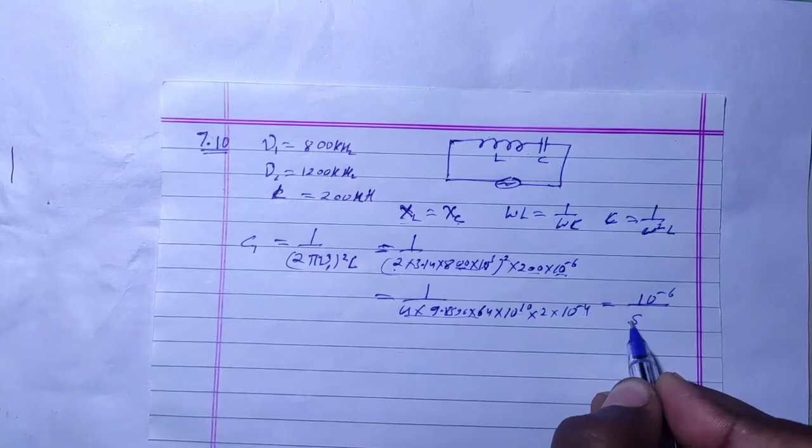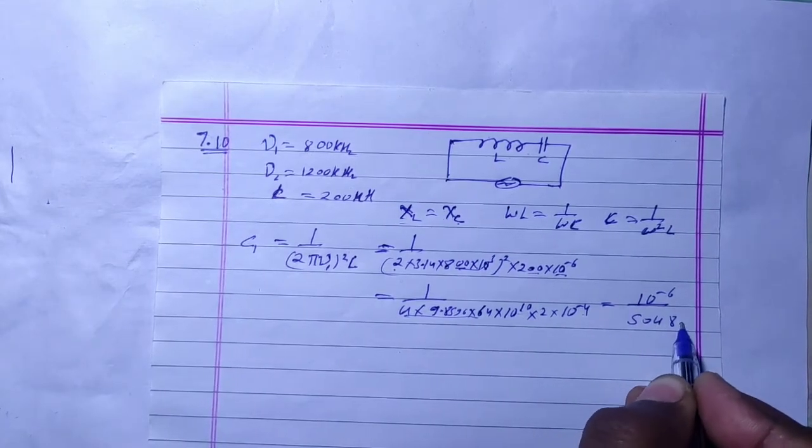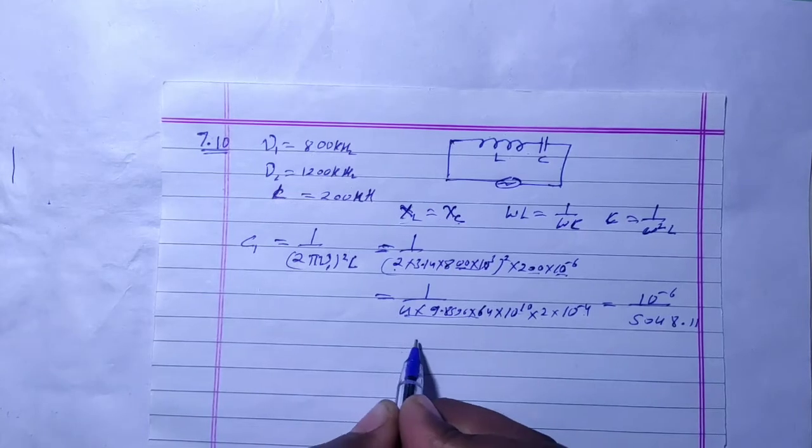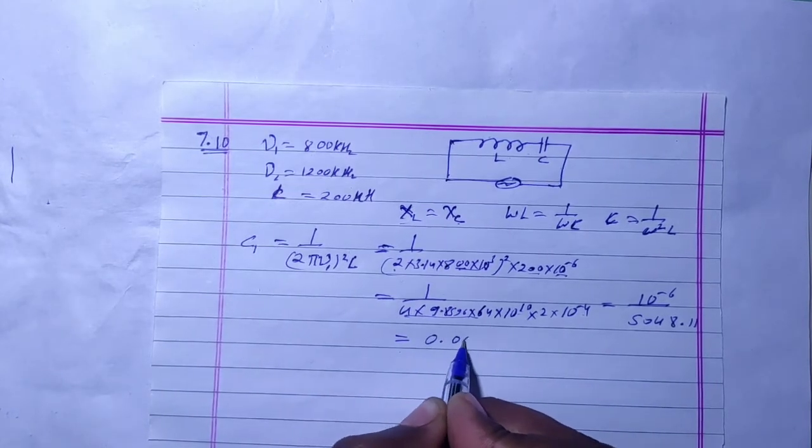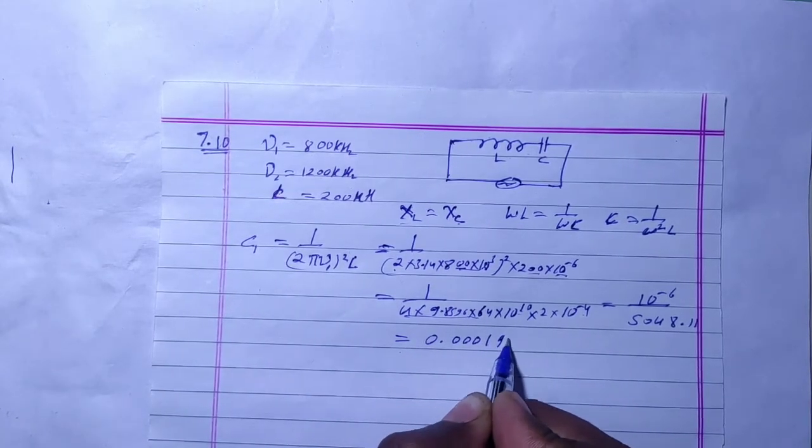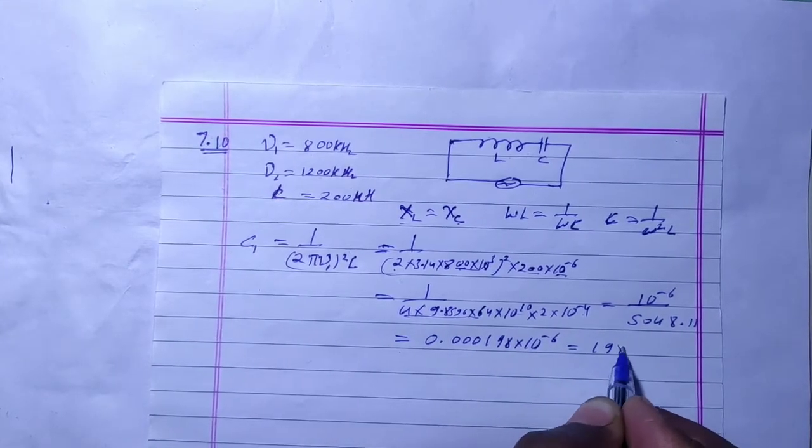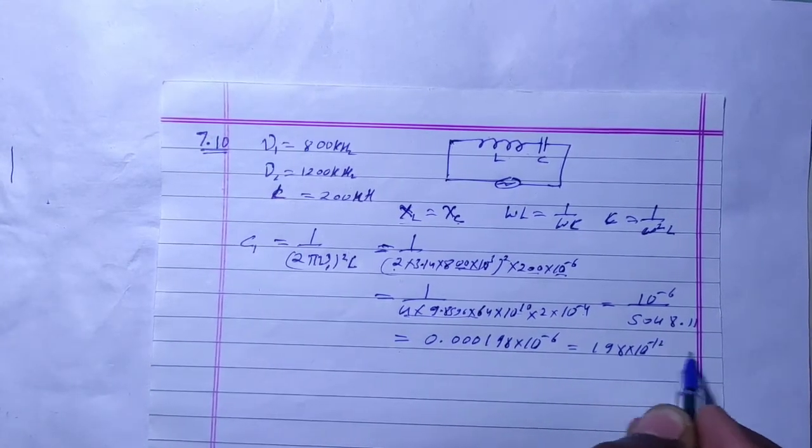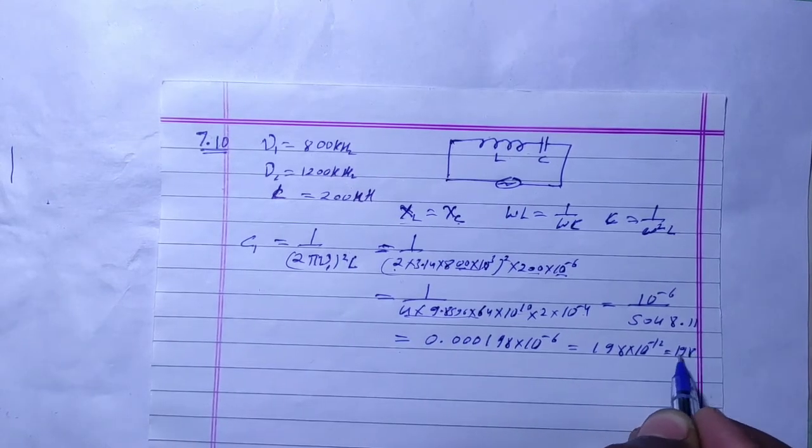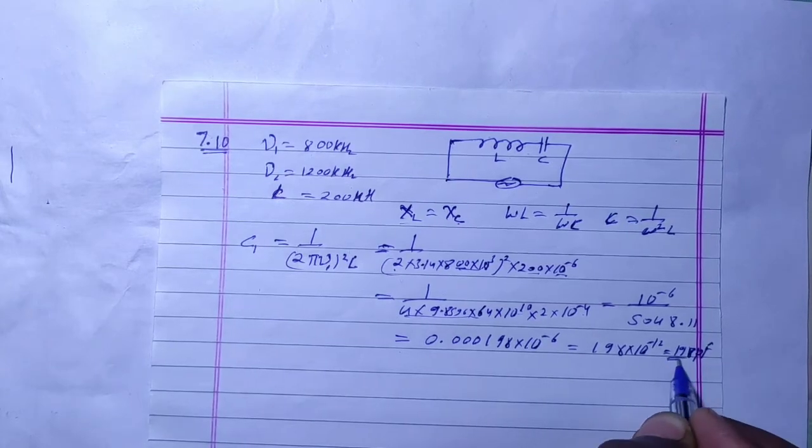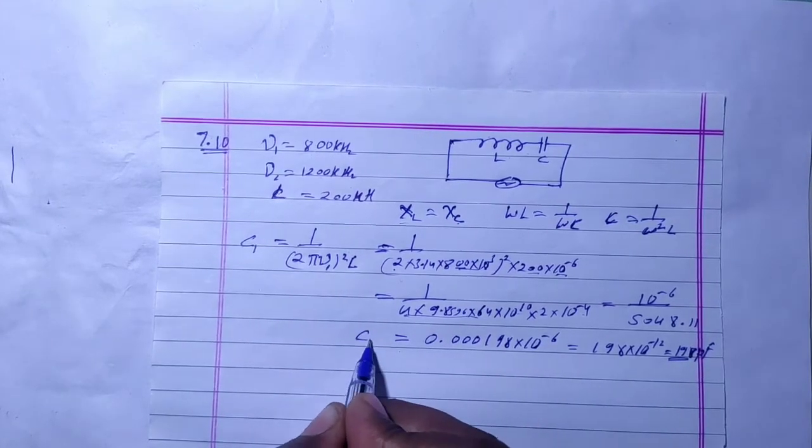If we multiply it, we have 4048.11 in the denominator. If we solve it, we have 0.000198 into 10 power minus 6 or 198 into 10 power minus 12, or 198 picofarad. This is the first capacitor.